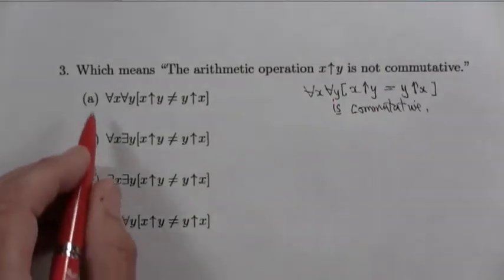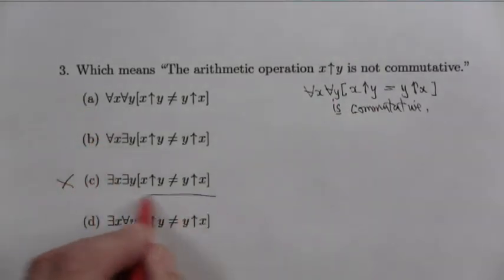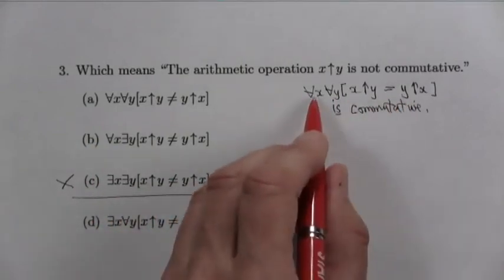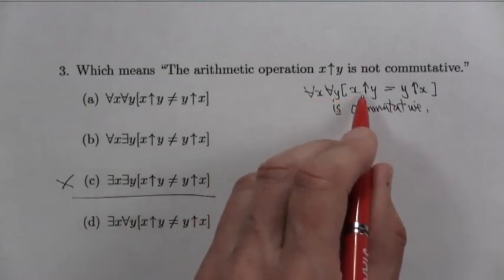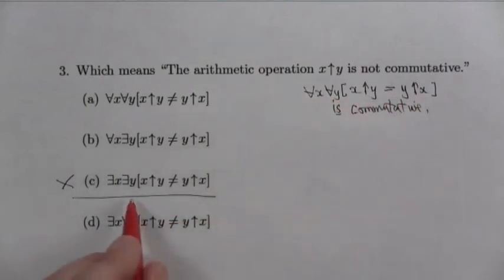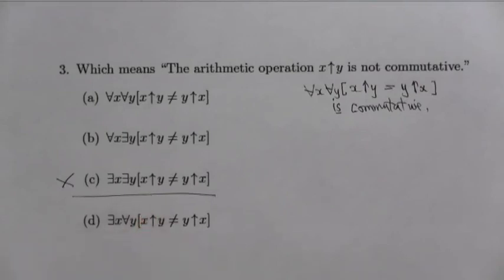Because commutativity requires that you have equality for all of them. And each one of these says something different. So there's the correct answer. There are a pair of numbers. And you could get it just by going through this and negating it. There is an x, there is a y, x↑y not equal to y↑x. Okay, let's look at number four.